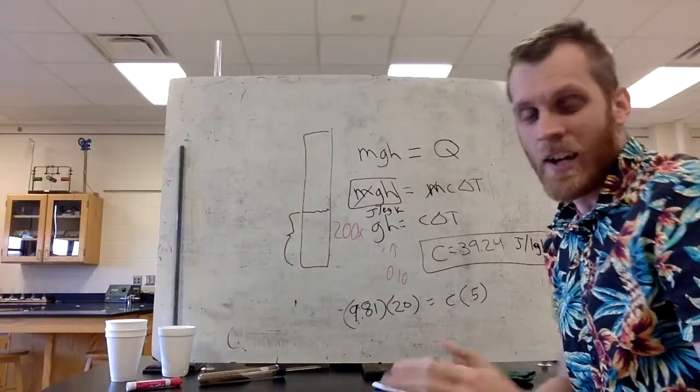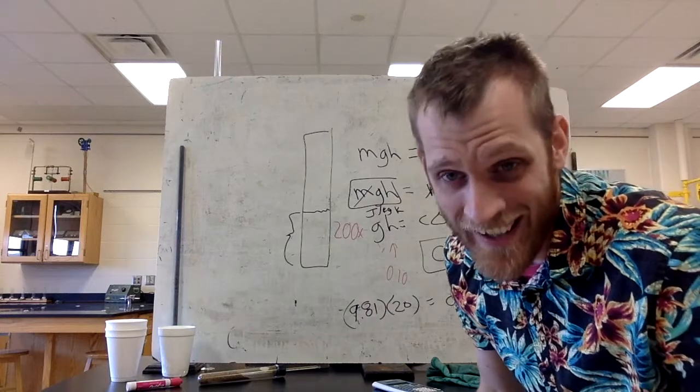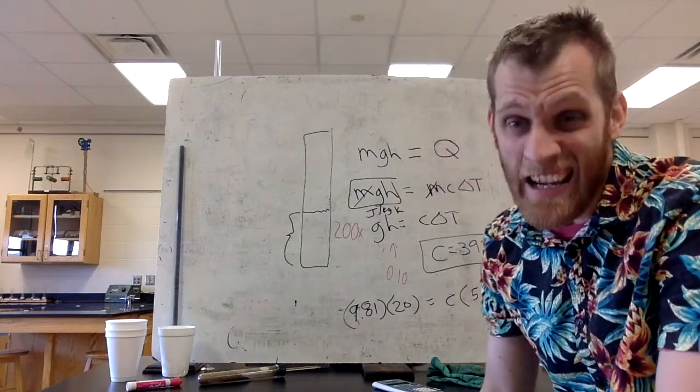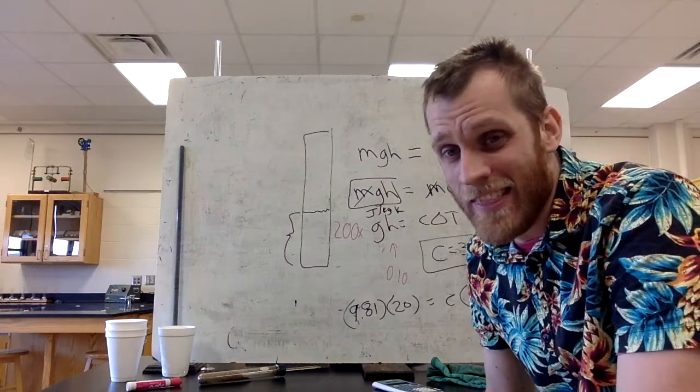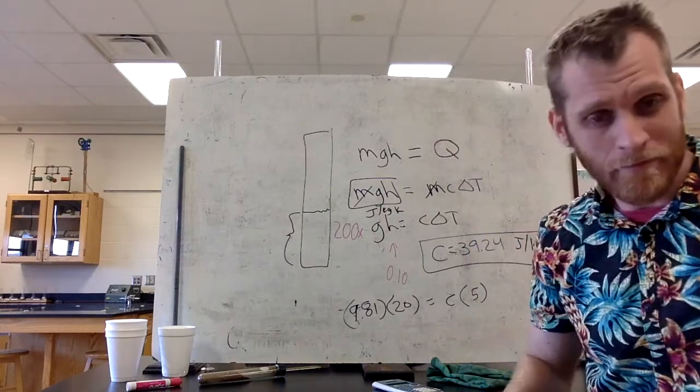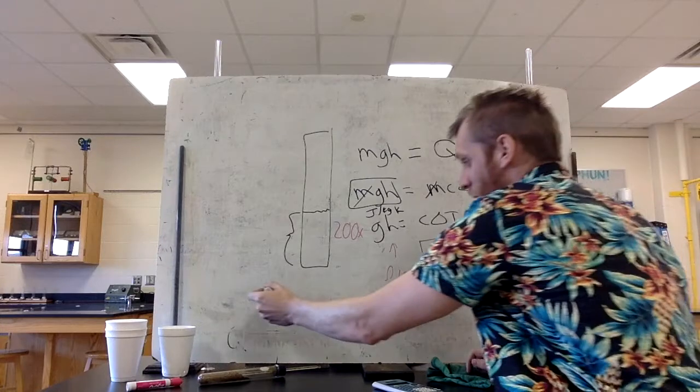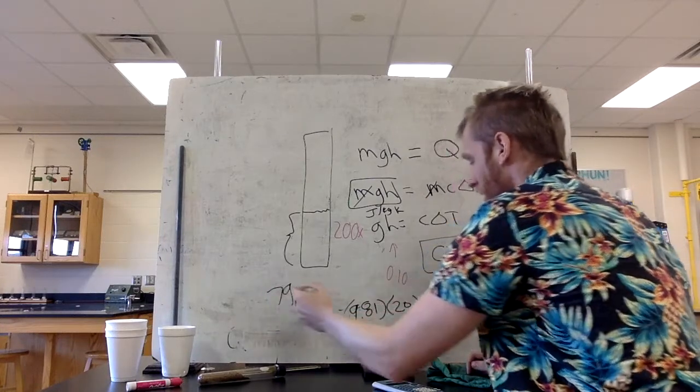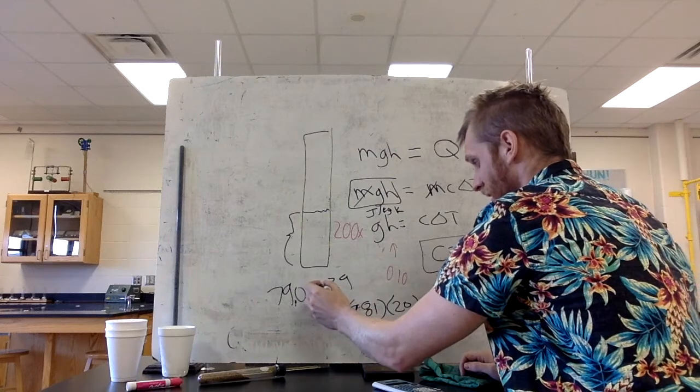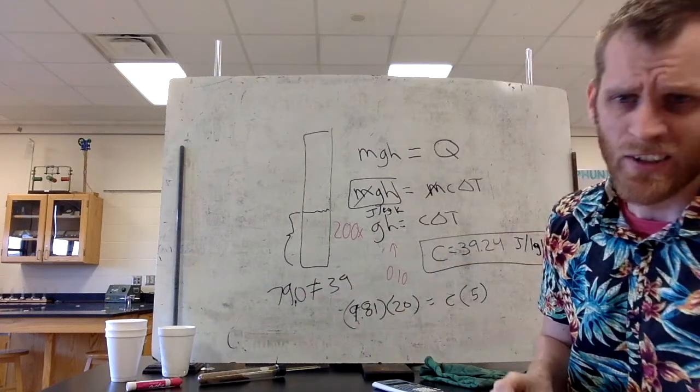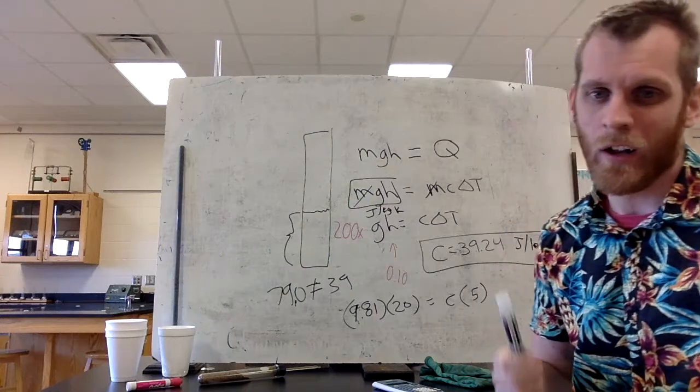39.24 is the specific heat capacity that I got for the sand. Now, the actual specific heat capacity of sand is 790 joules per kilogram kelvin. That's pretty far off. So the actual is 790, we got 39. They're not equal. So let's try to think about why they're not equal.